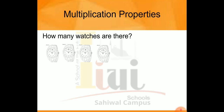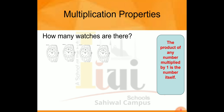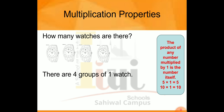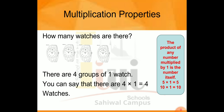Students, the product of any number multiplied by one is the number itself. You have one group of watches and in that group there are four watches. If you multiply one by four, or four by one, the answer is itself that same number — four. This property means that if you multiply any number by one, you will get that same number.